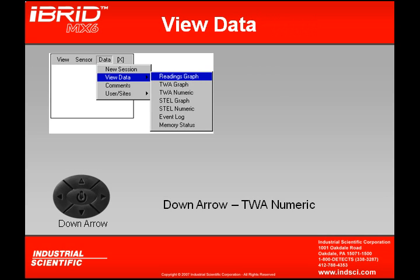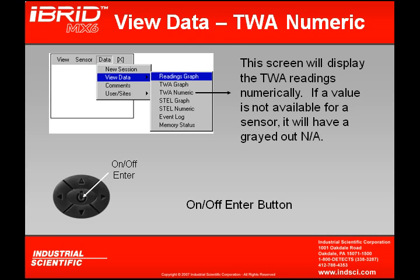If I hit the down arrow from TWA graph, I bring up my next option, which is TWA numeric. TWA numeric will show me the actual time-weighted average readings numerically, but there are a couple gases like oxygen and combustible which do not tabulate for time-weighted average, and therefore grayed out in their space will be the letters NA.